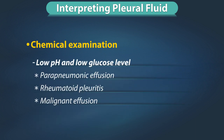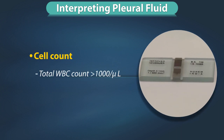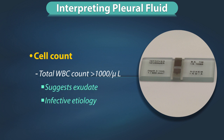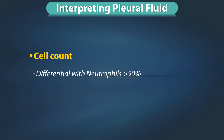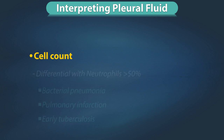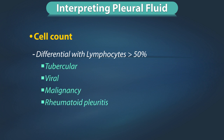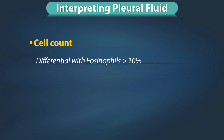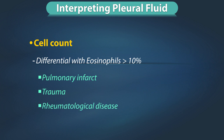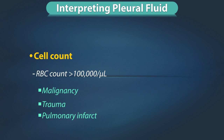Lactate levels are increased in bacterial and tubercular pleural infection. Lactate dehydrogenase levels rise in pleural inflammation. Low pH and low glucose level are seen in parapneumonic effusion, rheumatoid pleuritis, and malignant effusion. Total white blood cell count more than 1000 per microliter suggests an exudate and infective etiology. A differential count with more than 50% neutrophils is seen in bacterial pneumonia, pulmonary infarction, and early tuberculosis. A differential count with more than 50% lymphocytes is seen in tubercular, viral, malignant, rheumatoid pleuritis and SLE. A differential with more than 10% eosinophils can be seen in pulmonary infarct, trauma, or rheumatological disease.